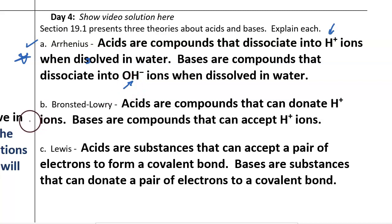There is another theory of acids created by the scientists Bronsted and Lowry. So the Bronsted-Lowry Theory states, acids are compounds that can donate hydrogen ions. Bases are compounds that can accept hydrogen ions.